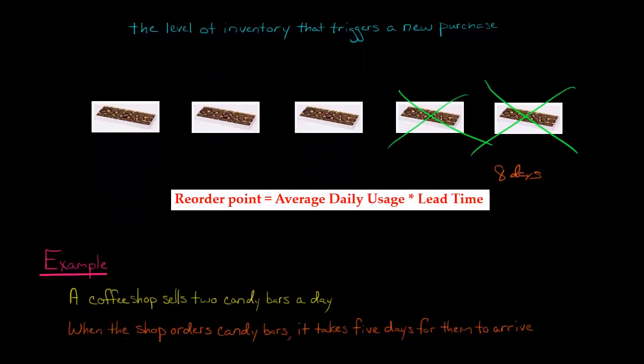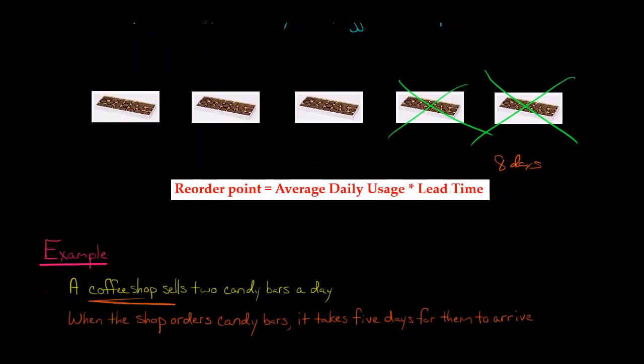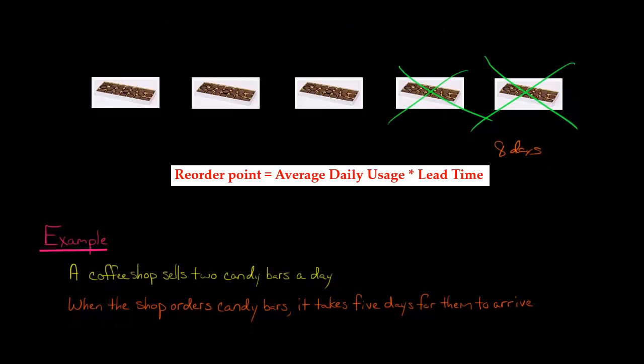Let's do an example. We've got a coffee shop that sells two candy bars every day. And when they order the candy bars, when they reorder, it takes five days for the candy bars to arrive. So the question is, what's the reorder point?